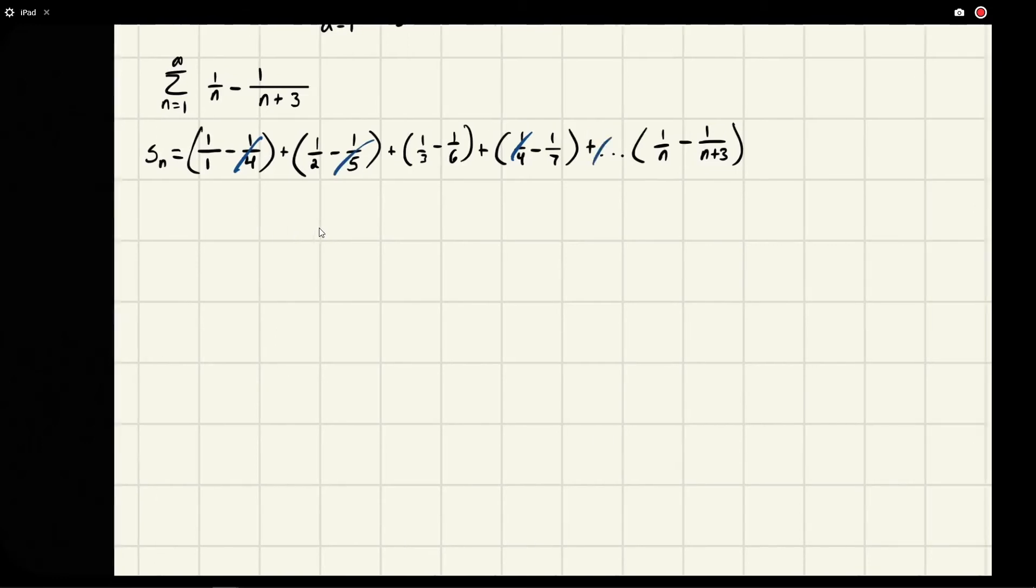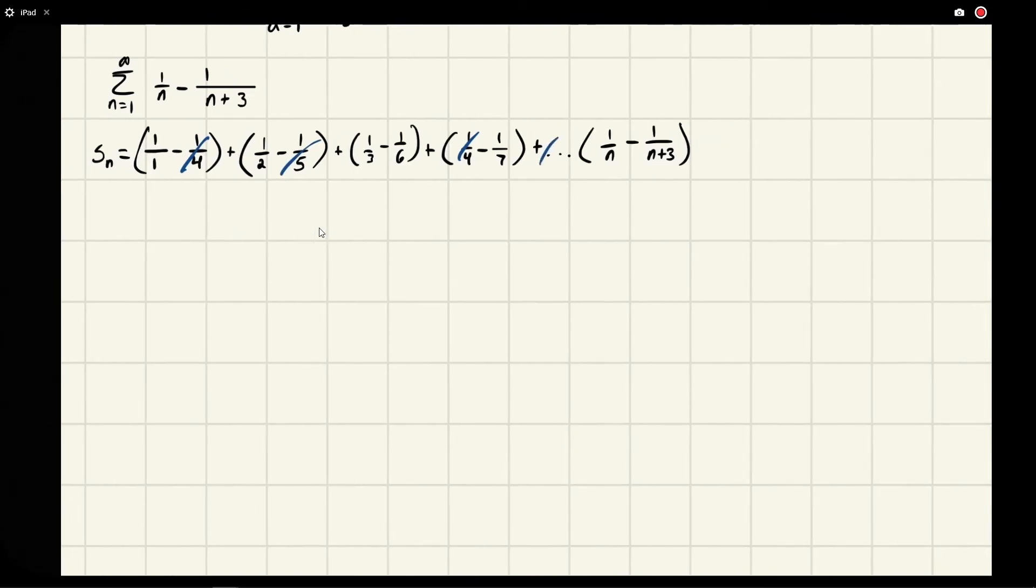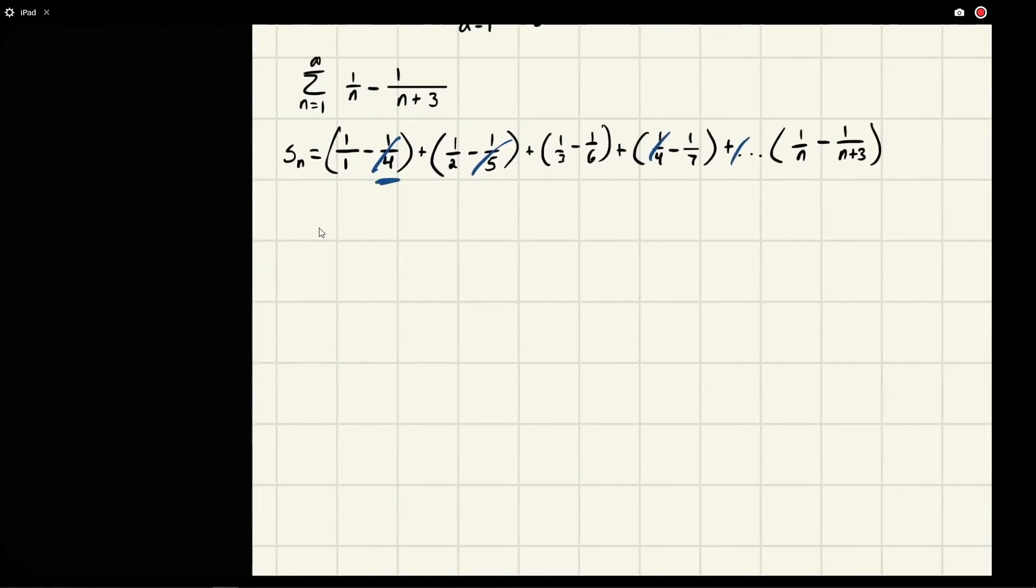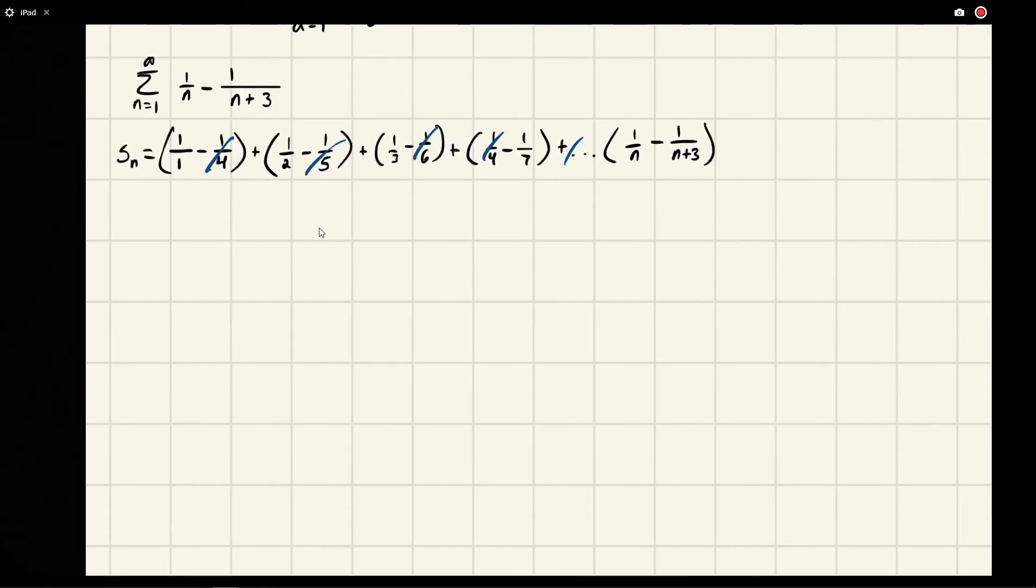Right, because we'd have 1/4 and then we'd have a 1/5 over here. And then this 1/6, the 1/3 right, there's no other 1/3 because we started at 1/4, so there's nothing for that one. But this 1/6 can cancel with a 1/6 that'd be somewhere over here.